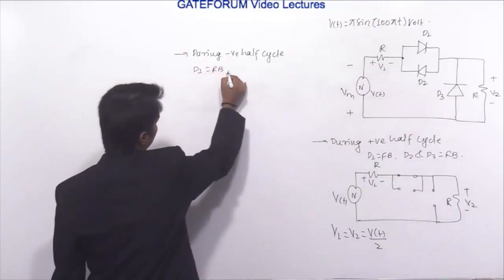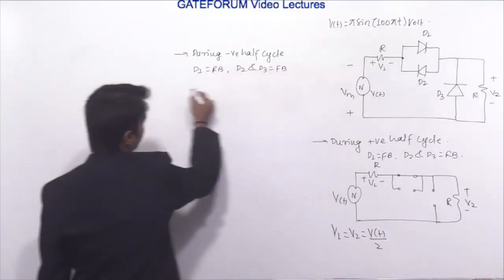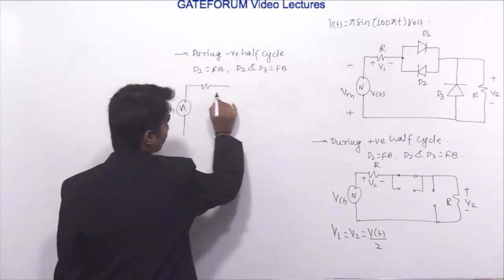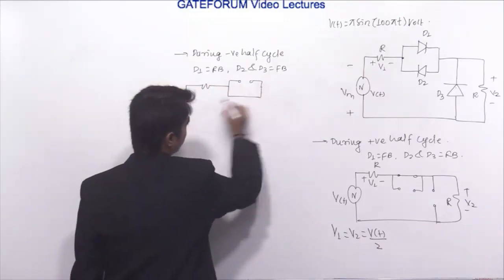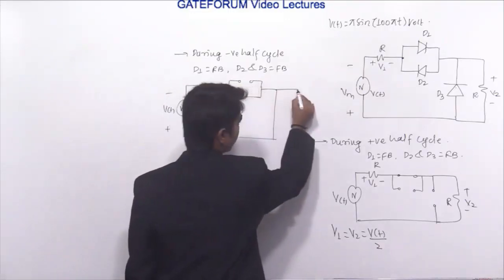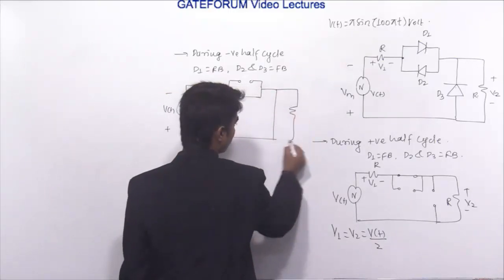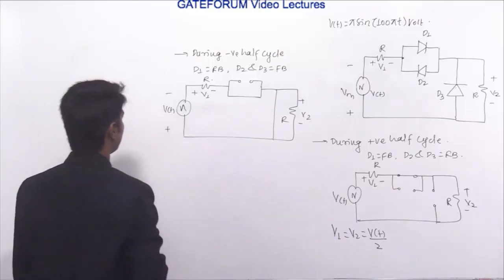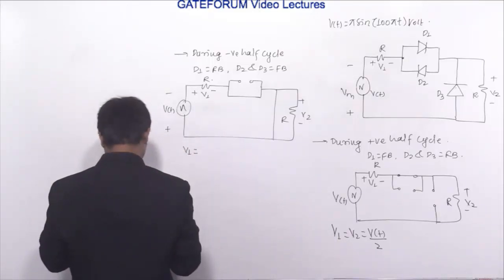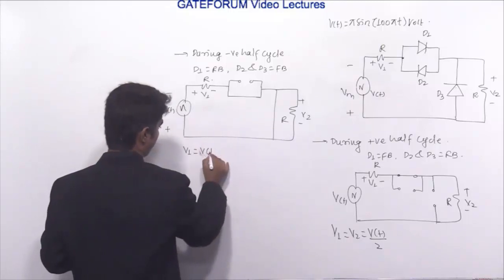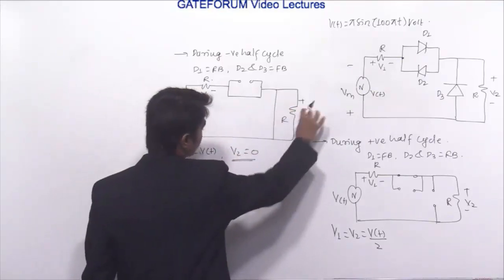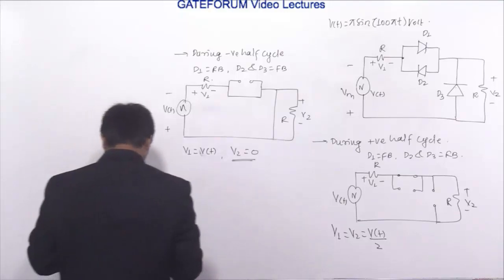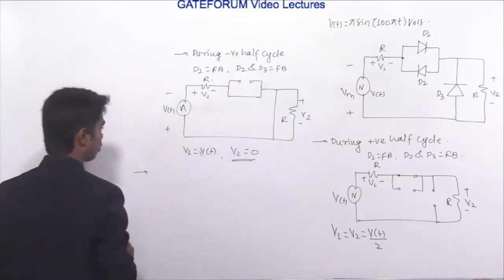During the negative half cycle, D1 is reverse biased and D2 and D3 are forward biased. In the equivalent circuit, D1 is open circuited and D2, D3 are short circuited. Therefore V1 equals V(t) and V2 equals 0, because the voltage across a short circuit is 0.